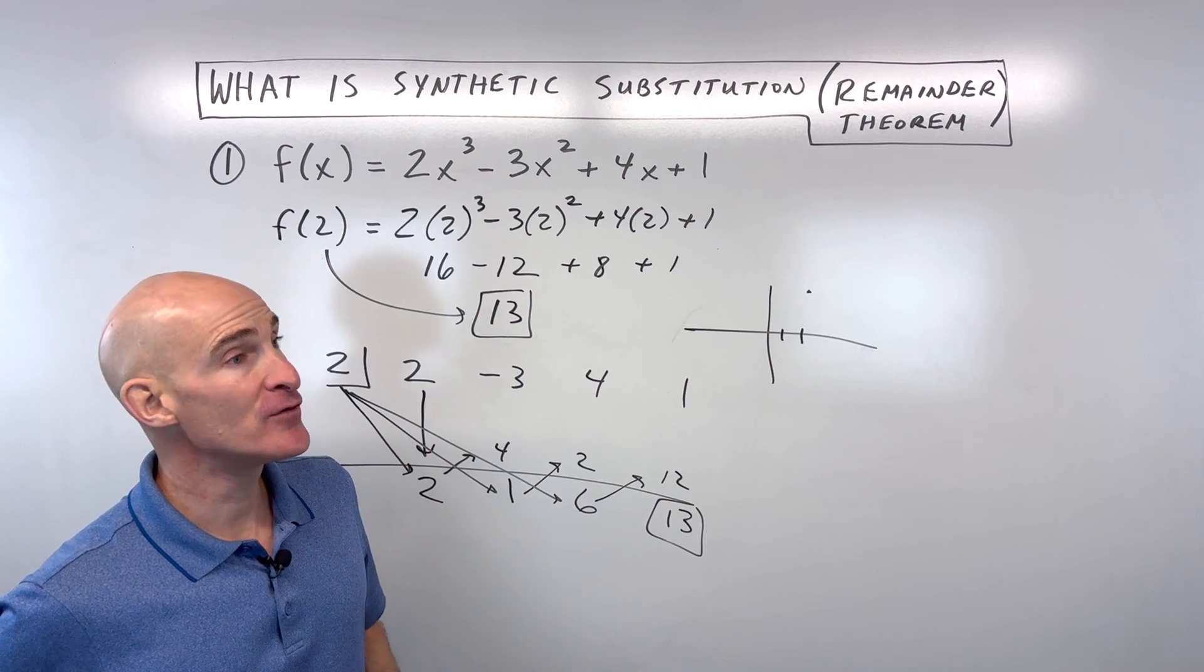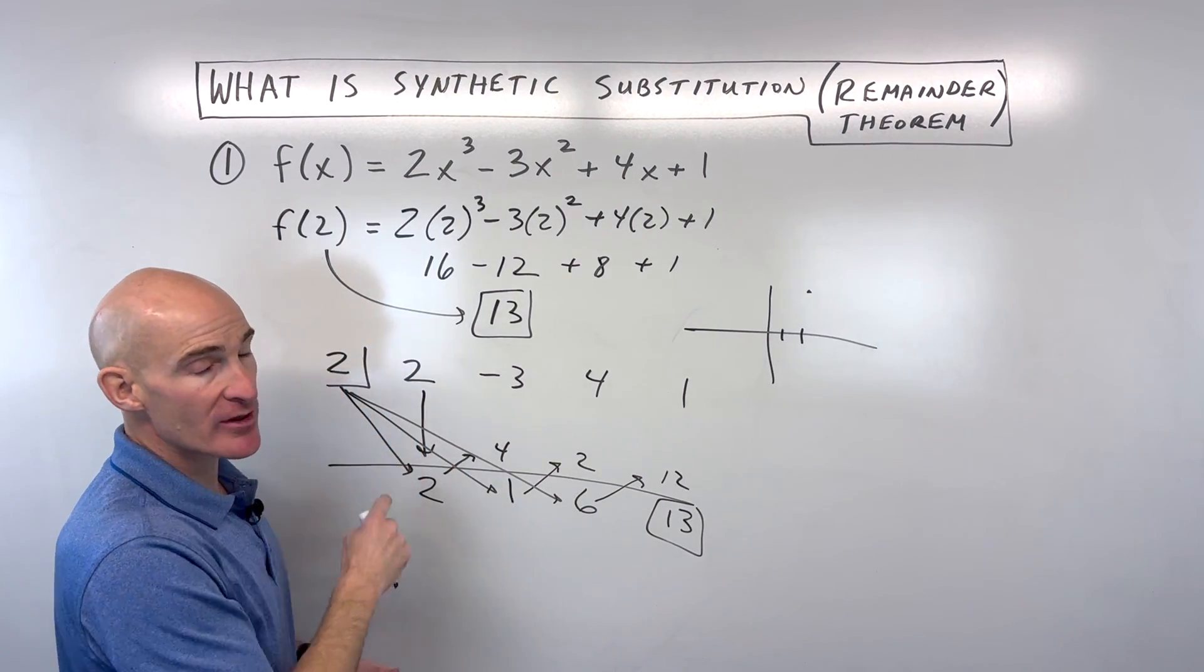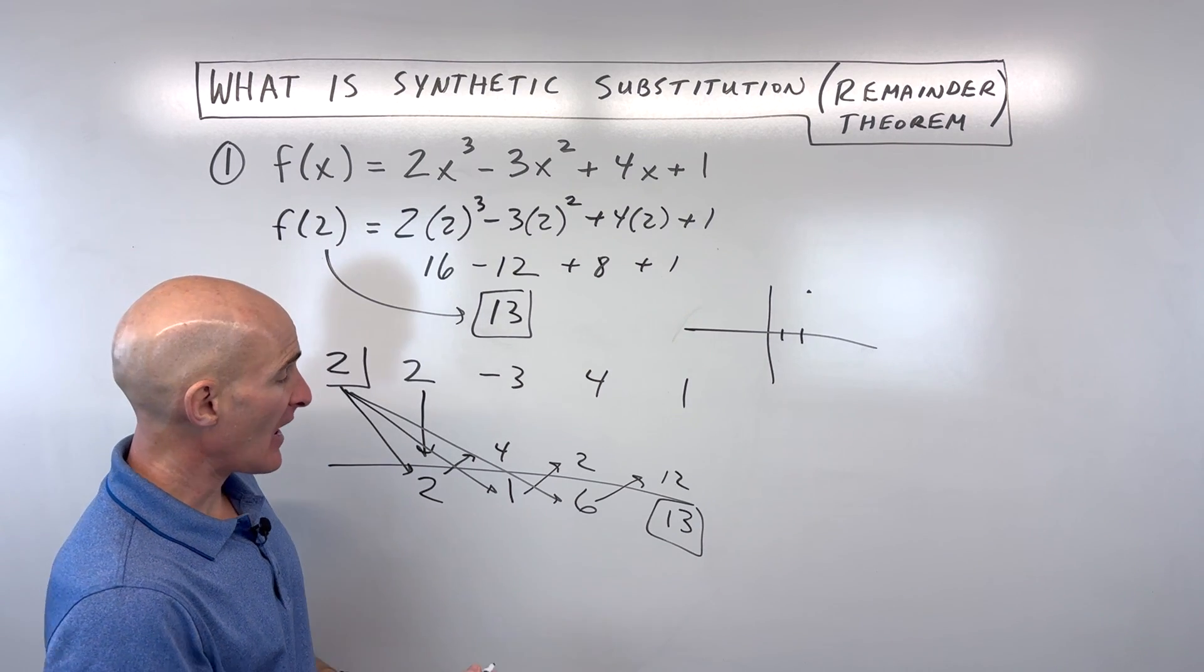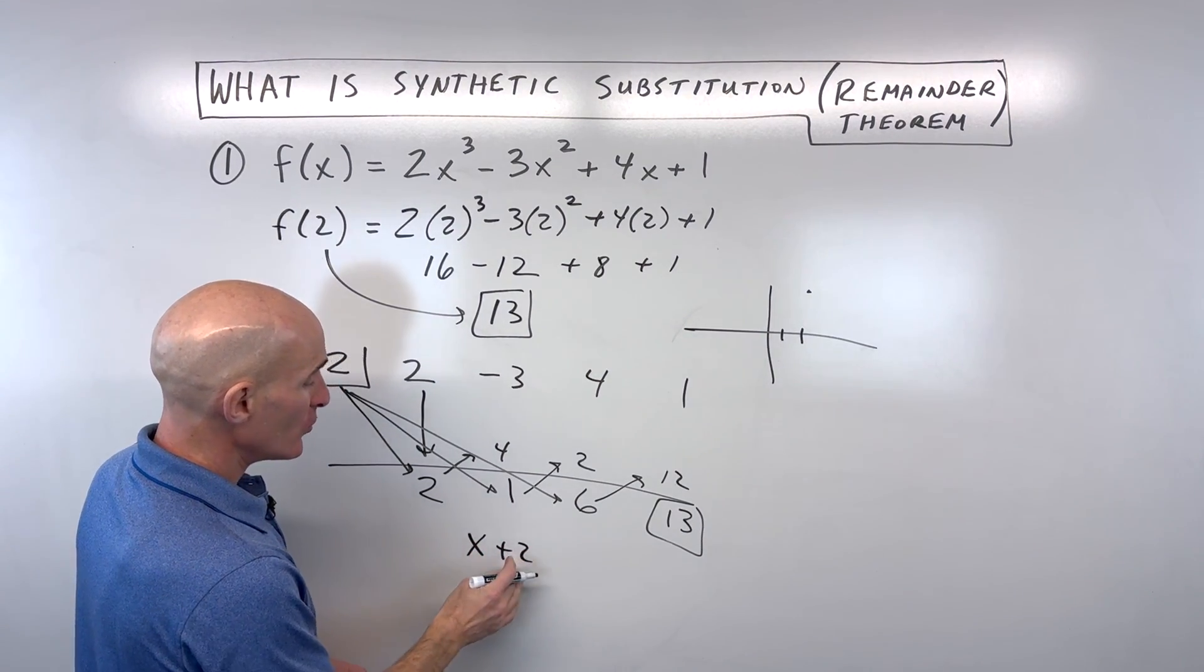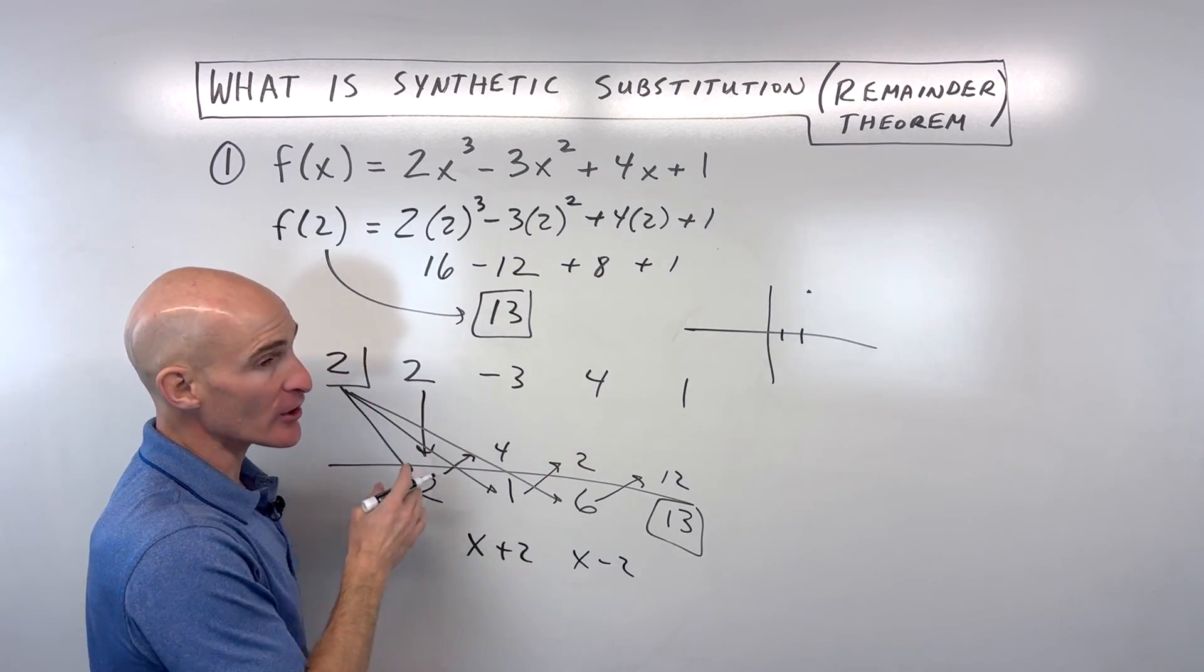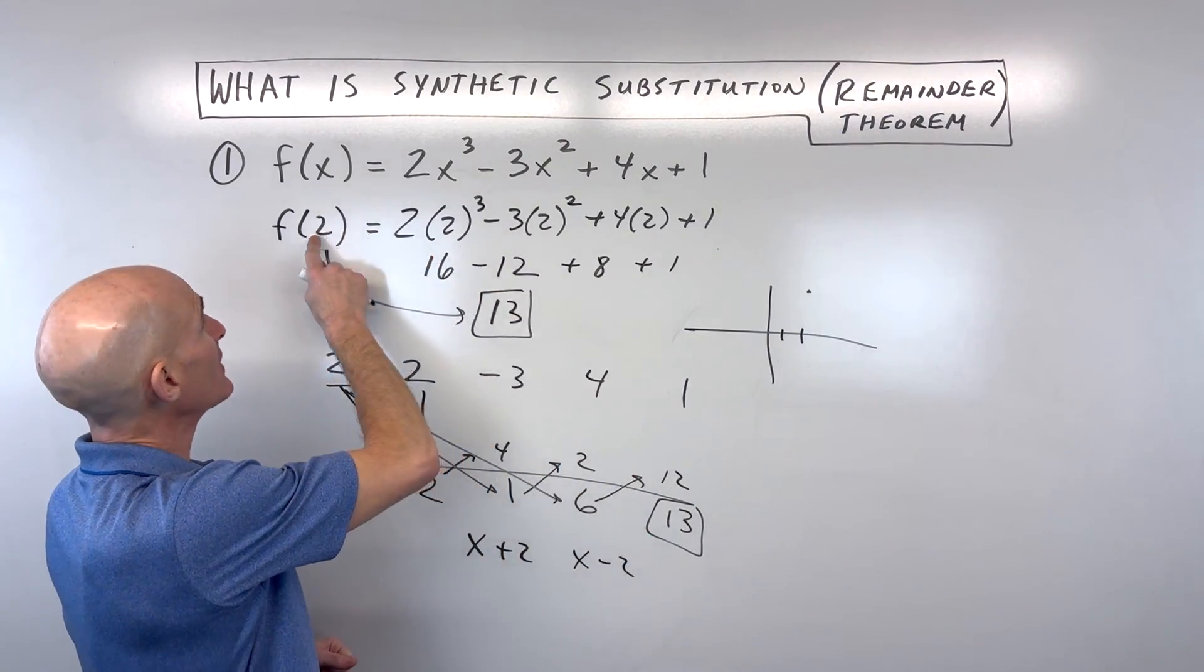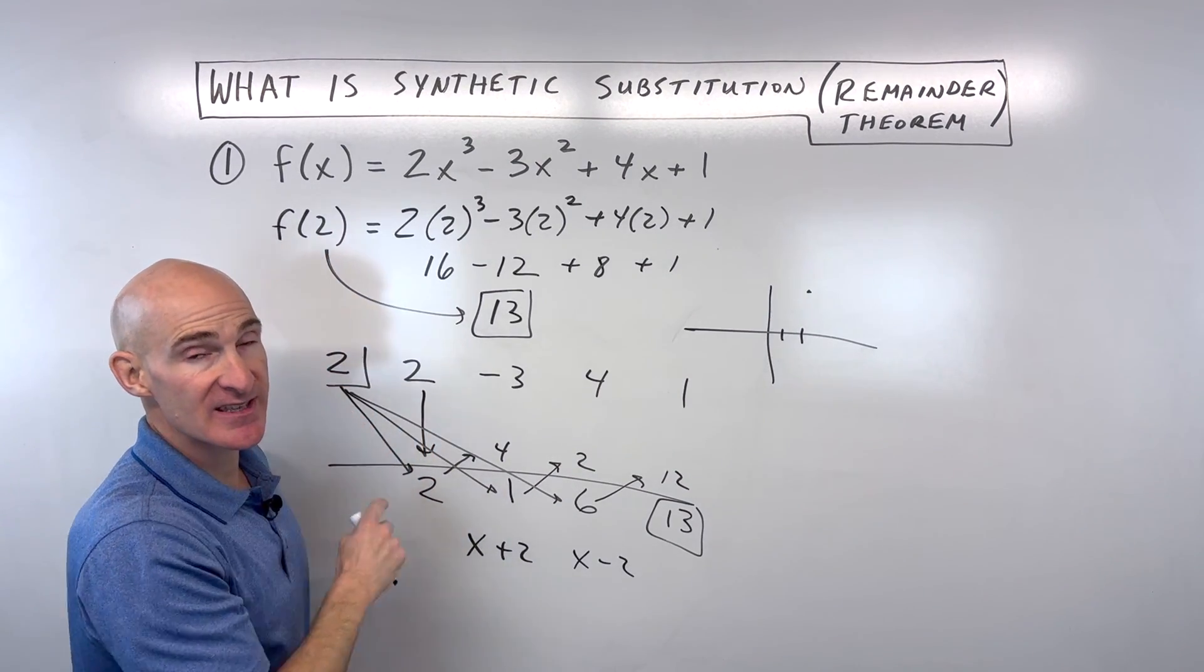Now, sometimes students get a little bit confused because they say, Mario, when I was doing synthetic division, I always changed this number to the opposite. So, like, if you were dividing by x plus 2, you would put negative 2 here. Or if you were dividing by x minus 2, you'd put positive 2 here. You don't do that when you're doing the synthetic substitution method. If you're evaluating f of 2, you just put 2. And it's the exact same.